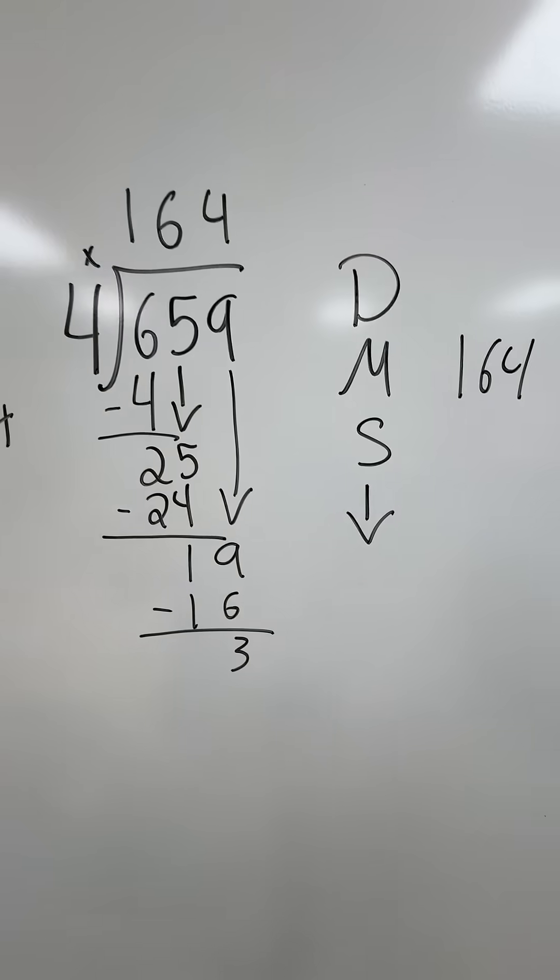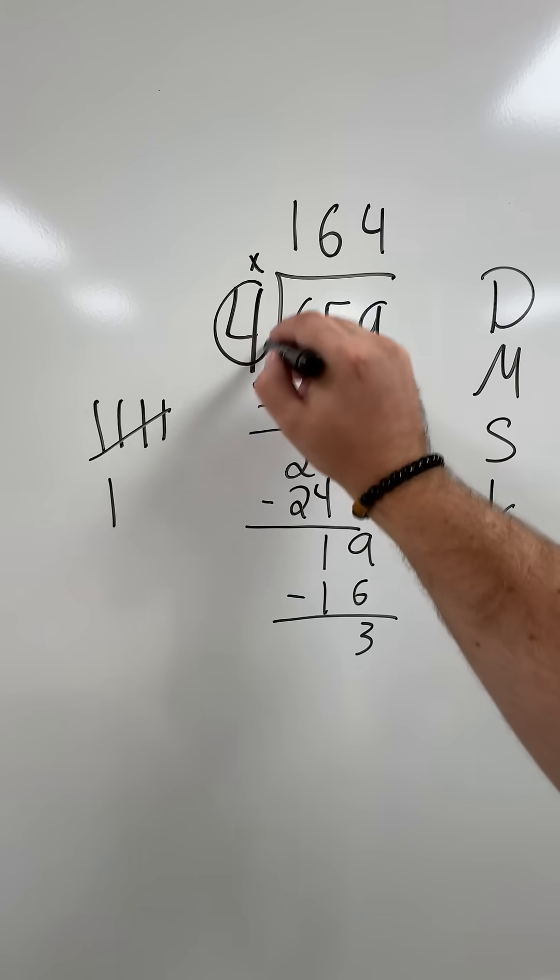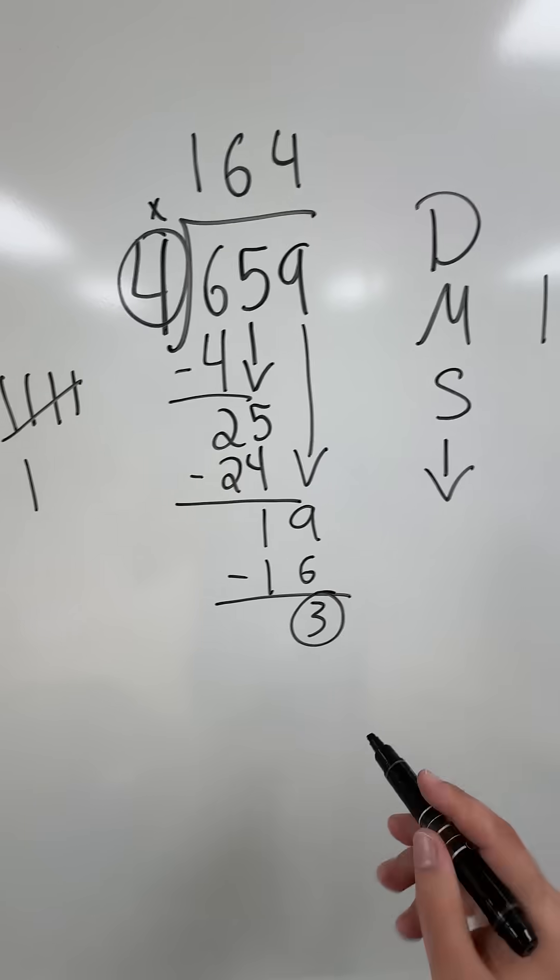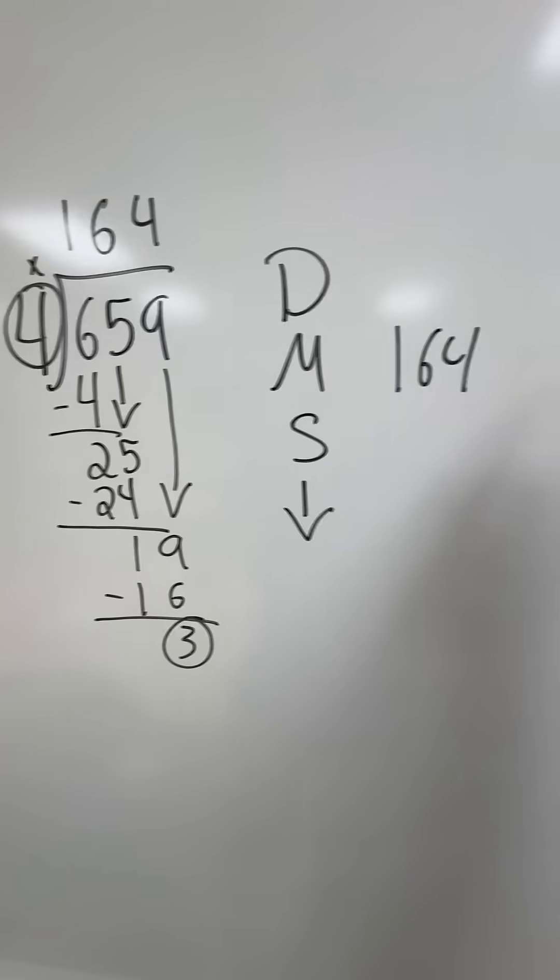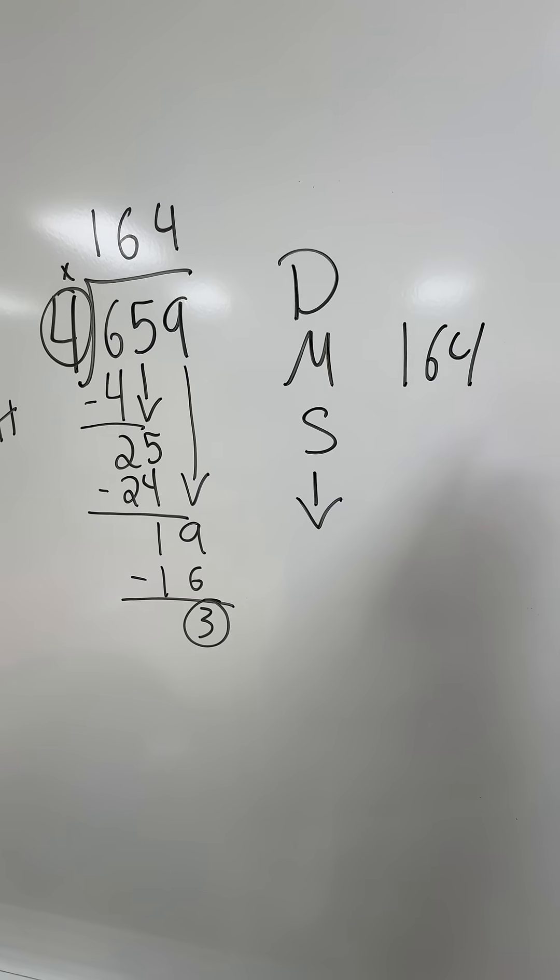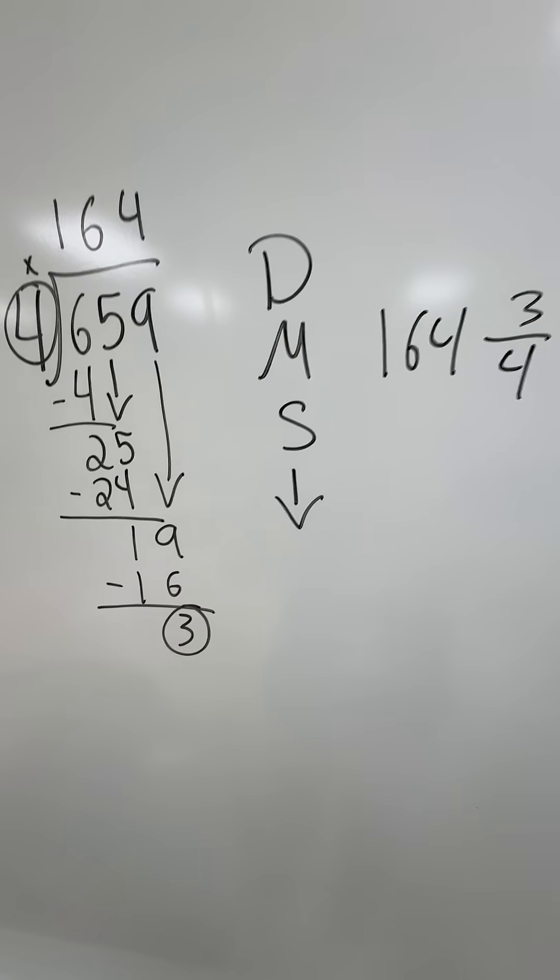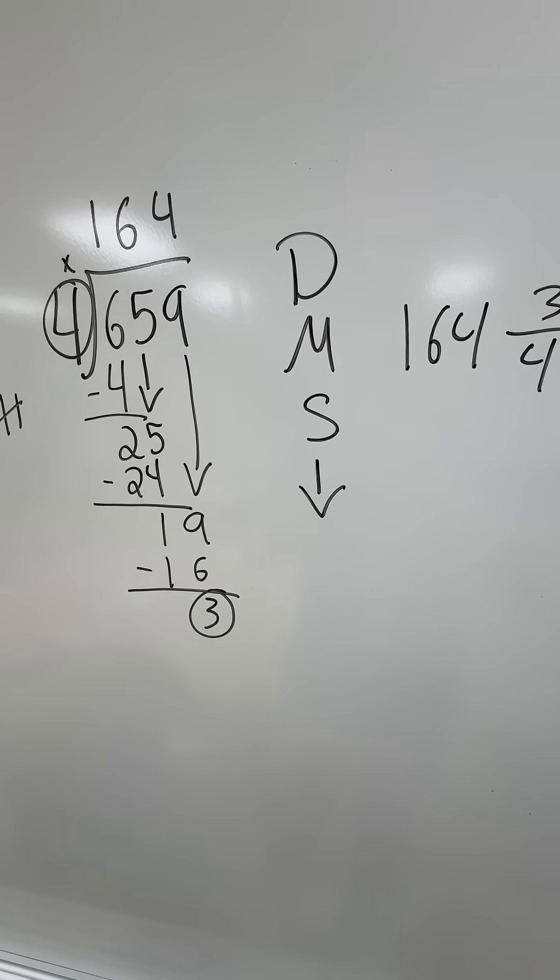And then I have the remainder. Remember, we look at our number we're dividing by, and we have the remainder. And we flip it. So we have 164 and 3 fourths.